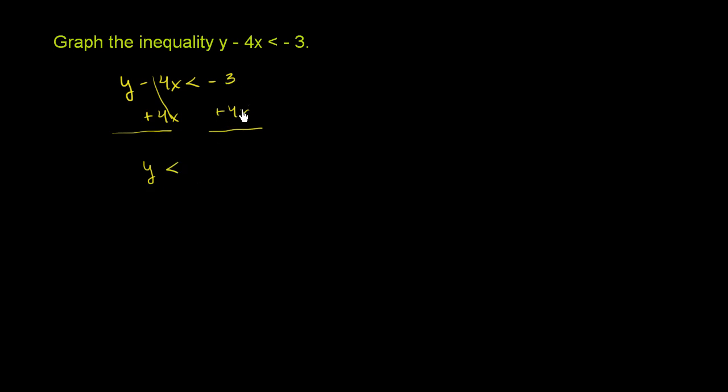We could have negative 3 plus 4x, but we want to write the 4x first just because that's a form that we're more familiar with. So it's less than 4x minus 3. And now we can attempt to graph it, but before I graph it, I want to do something a little bit careful here.